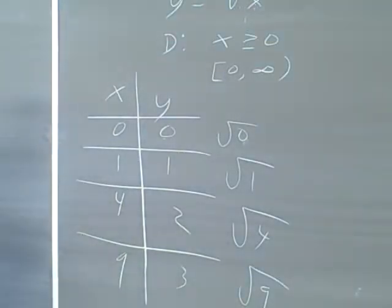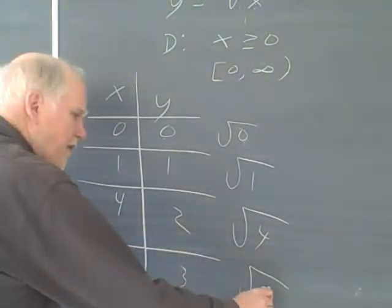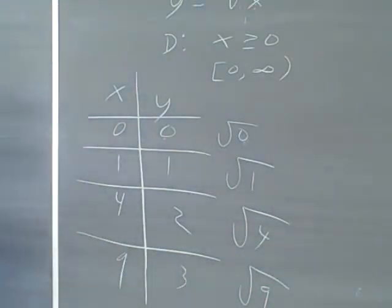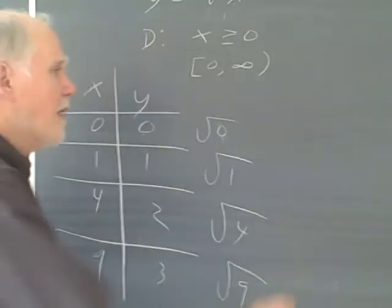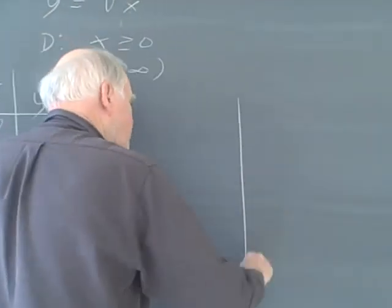All right, and then I'm going to do the square root of 9, and I get 3. I don't get plus or minus anything. Remember, the square root symbol is a function for every x value. I get exactly one y value of the positive root. So I've got this all figured out, and I'm going to go over here, and I'm going to sketch these.